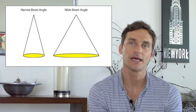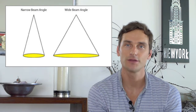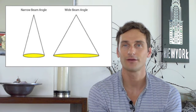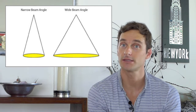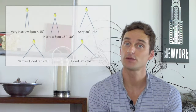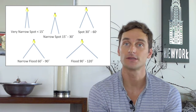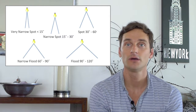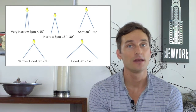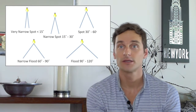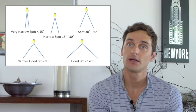Engineers at light bulb factories making PAR lamps played around with the shape of the reflector and were able to offer the same PAR lamp with different beam spreads. Thus were born the terms to describe the beam angle of PAR lamps — five in total: very narrow spot, narrow spot, spot, narrow flood, and flood.